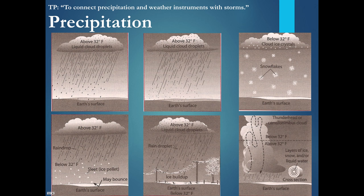Rain occurs when you have liquid droplets right above 32 degrees Fahrenheit. Drizzle has very small droplets, also above 32. Snow is below 32 degrees Fahrenheit. Sleet: first it falls as rain above 32 degrees Fahrenheit, but the temperature in the atmosphere is below 32 degrees Fahrenheit, so you have these ice pellets as sleet, and they may bounce on the surface.